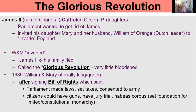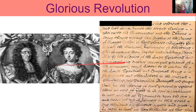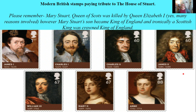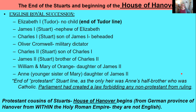Citizens could also have guns, had the right to a jury trial, and even had habeas corpus. This set the foundation for a limited or constitutional monarchy — it basically stripped the king and queen more and more of their power and handed it over to Parliament. William and Mary are revered as some of the most amazing king and queen of England — there's even a school in Virginia named after them.